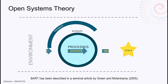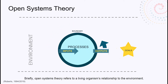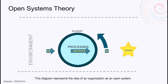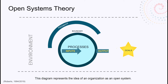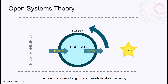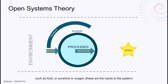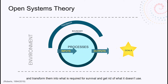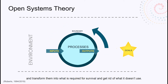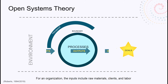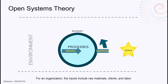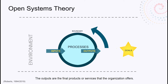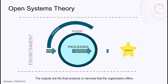BART has been described in a seminal article by Green and Mollenkamp. Open systems theory refers to a living organism's relationship to the environment. This diagram represents the idea of an organization as an open system. In order to survive, a living organism needs to take in nutrients such as food, sunshine, or oxygen — these are the inputs to the system — transform them into what is required for survival, and get rid of what it doesn't use. For an organization, the inputs include raw materials, clients, and labor that act to transform the raw materials into a final product or service. The outputs are the final products or services that the organization offers.